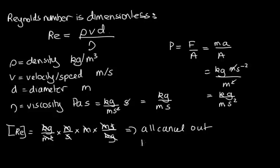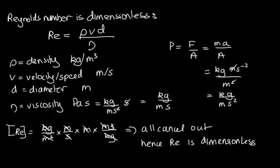So hence the Reynolds number is dimensionless. And in proving this, we've assumed that the units for viscosity are pascal seconds, or alternatively we can write it as kilograms divided by metre seconds.